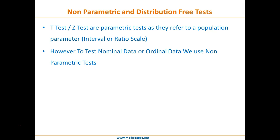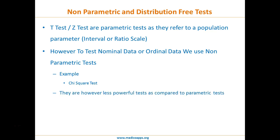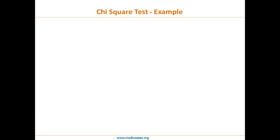For nominal or ordinal data — remember, nominal data includes yes/no or male/female categories — we use non-parametric tests. The most commonly used non-parametric test is the chi-square test. However, these tests are less powerful compared to parametric tests. The chi-square test is the only non-parametric test covered in the scope of our lectures.